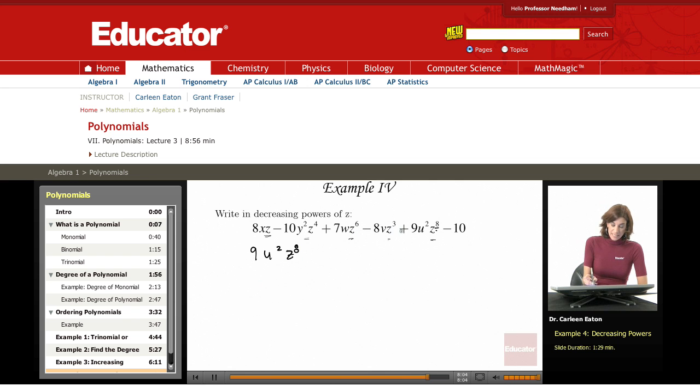Then I see that the next one would be z to the 6th, 7w z to the 6th.